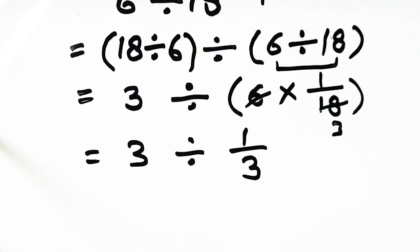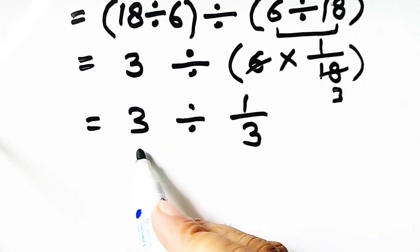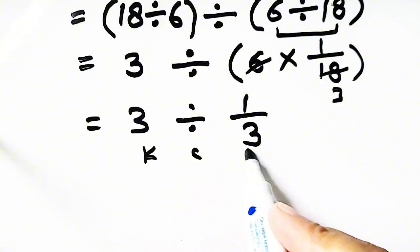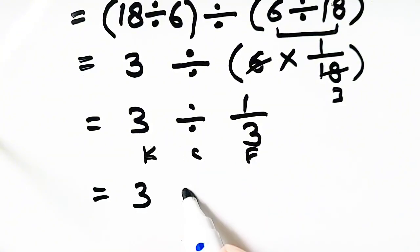Now, again, we will apply the KCF rule. What is KCF? Keep it, keep the first one. C means change it, we have changed division into multiplication, and flip it. 1 over 3 is flipped, so it will become 3.